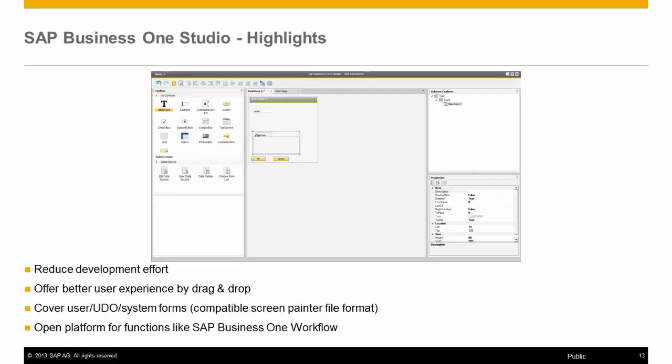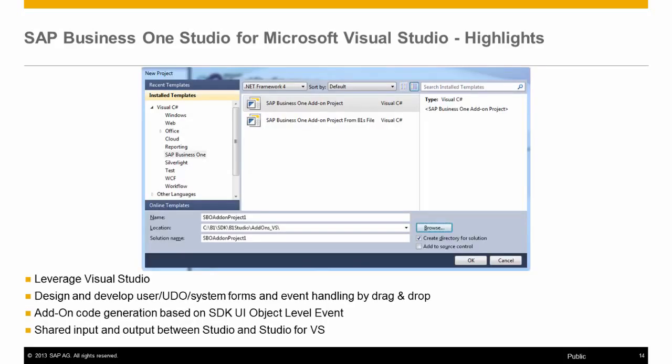SAP Business One Studio not only contains all the functionalities of Screen Painter, but also enhances the functionalities and optimizes its usability. You can use SAP Business One Studio integration with Microsoft Visual Studio, where there are widgets for the creation of add-on products for Visual Basic and C Sharp. This interface is used by developers and streamlines the development process even further, as much of the code for the UI and DI is generated for you.